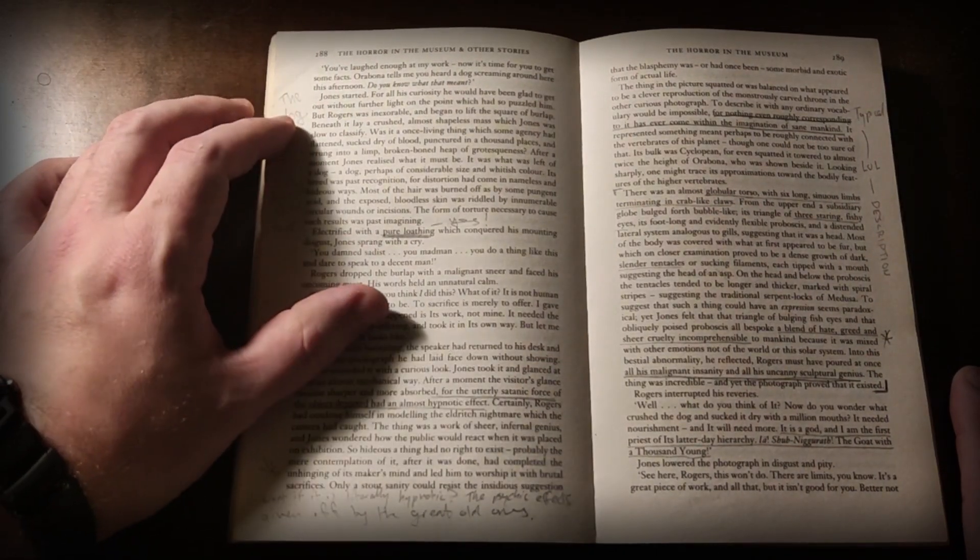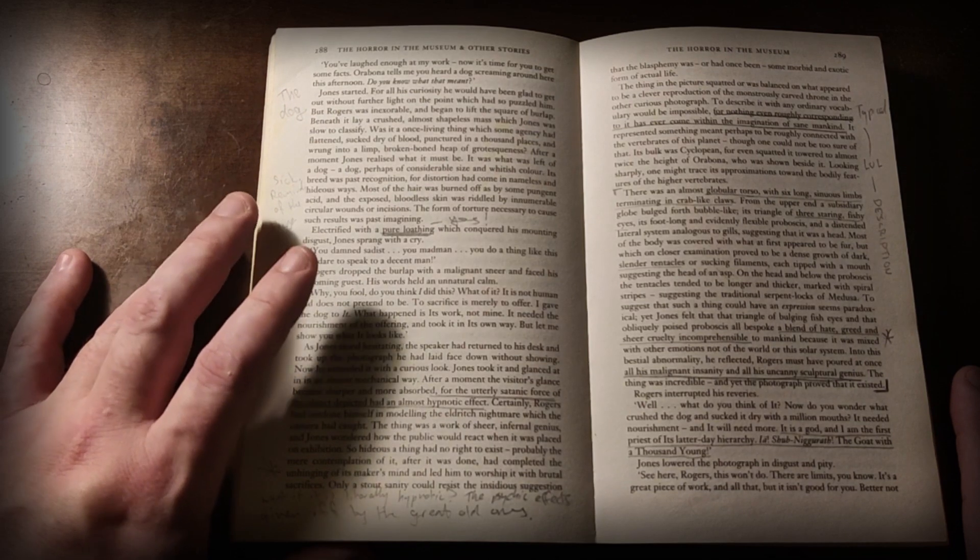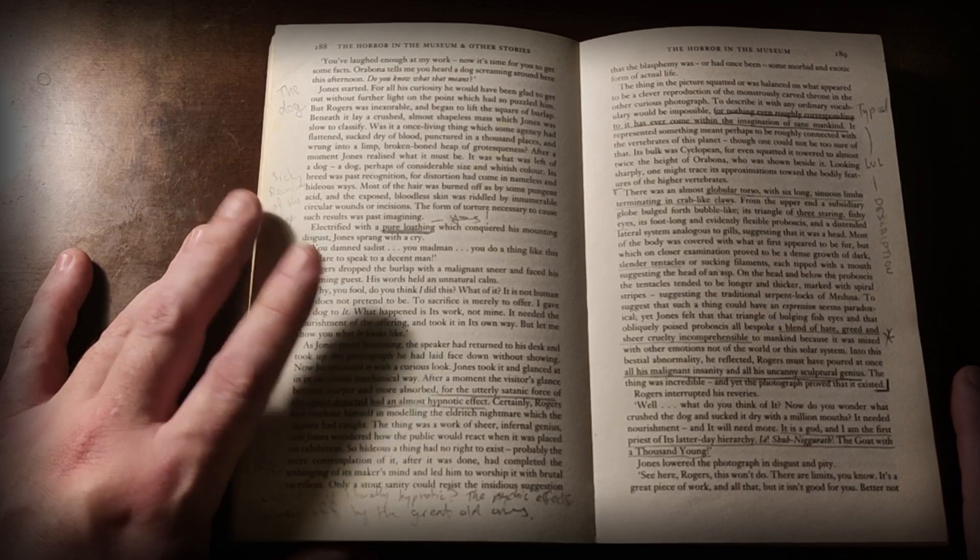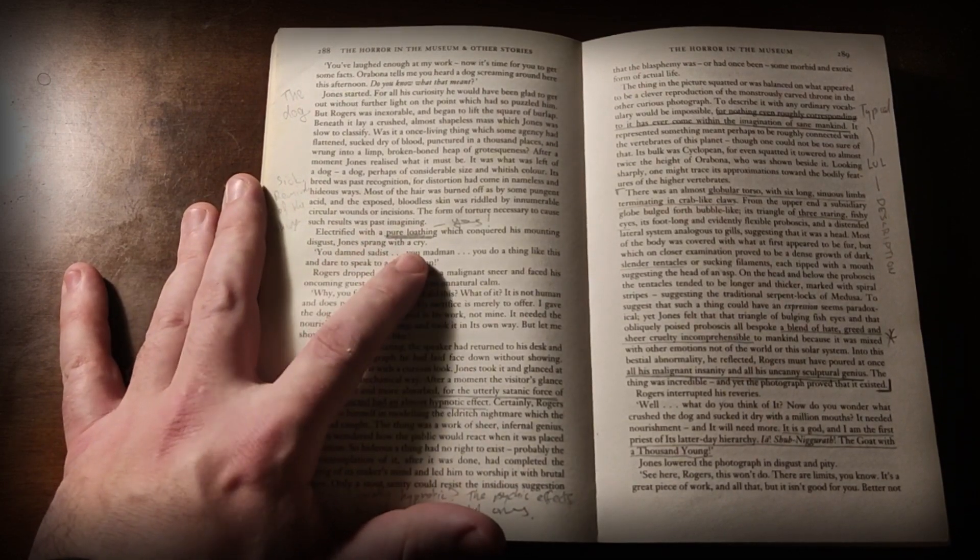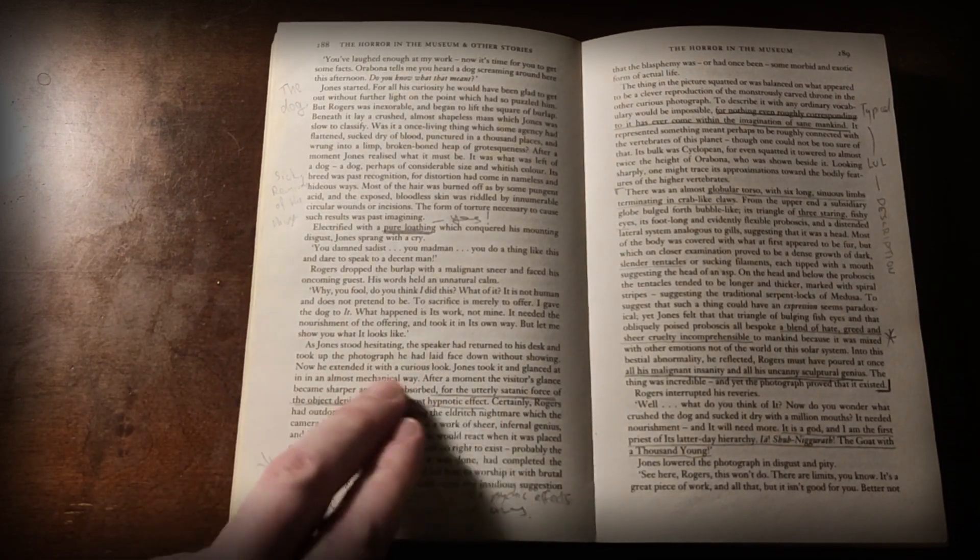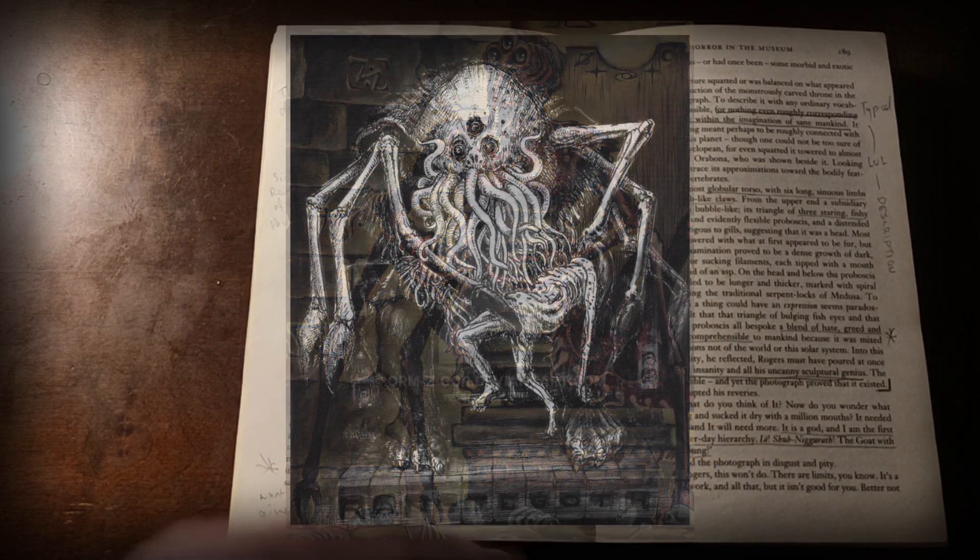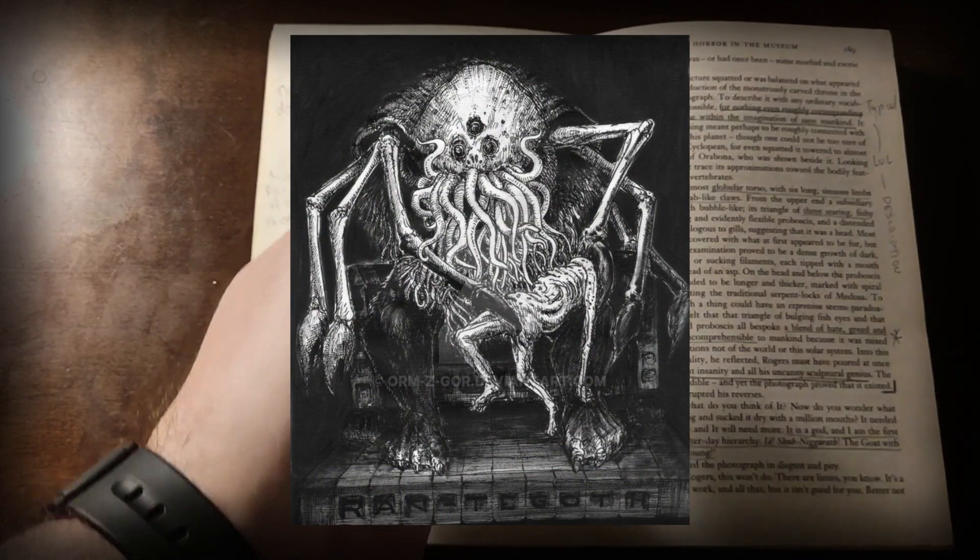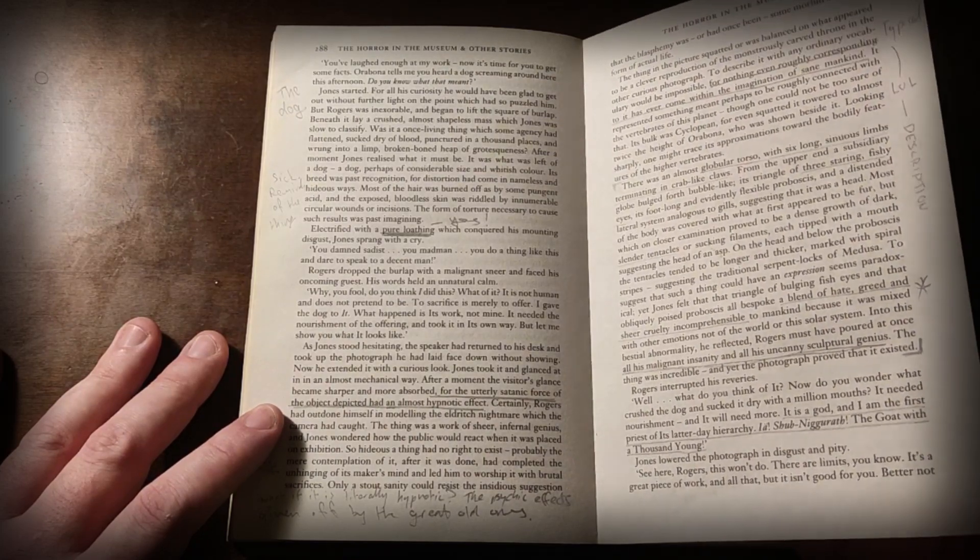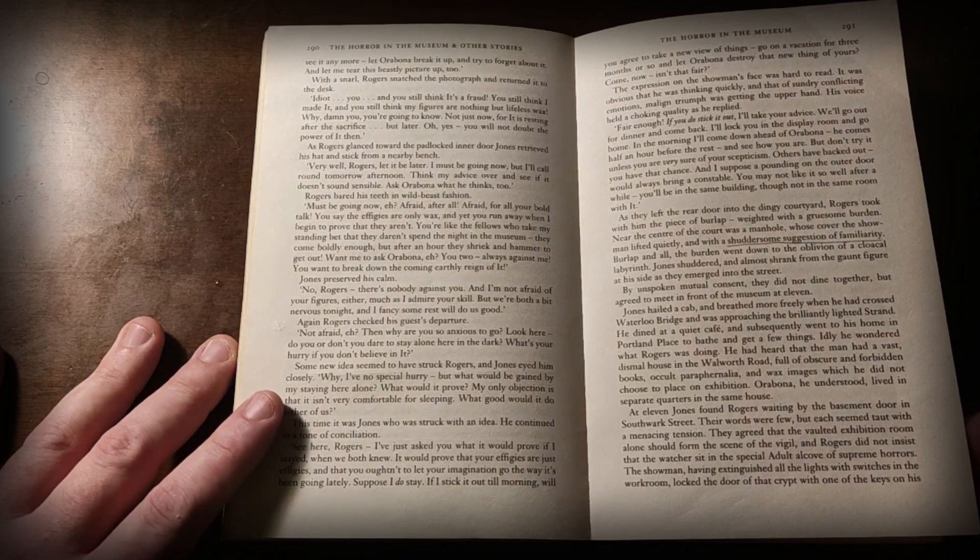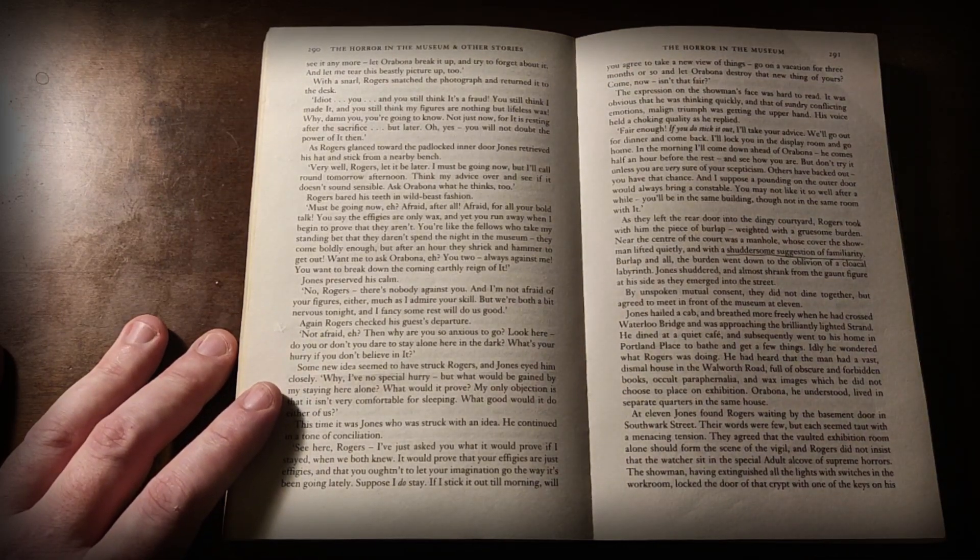For example here, a dog is given as a sacrifice to Rhan-Tegoth, which is the main creature here. He sees how this dog died, and then he says 'electrified with a pure loathing which conquered his mounting disgust, Jones sprang with a cry' - Jones is the protagonist. Later on after seeing a photo of Rhan-Tegoth, 'the utterly satanic force the object depicted had an almost hypnotic effect.' What happens is that George Rogers the cultist wants to worship it, calls it a god, and calls himself a slave of this creature. But the hero Stephen Jones wants to destroy it. That's the issue of how cultists communicate versus the übermensch - the two types of characters you'll see in a Lovecraft story.